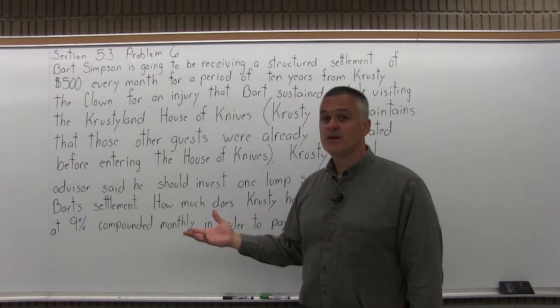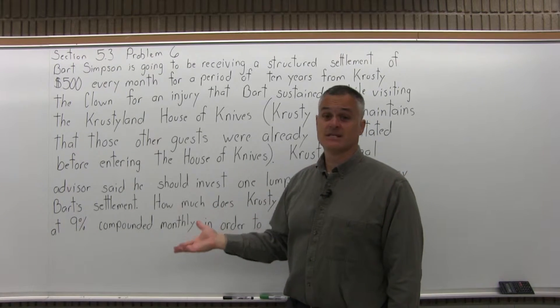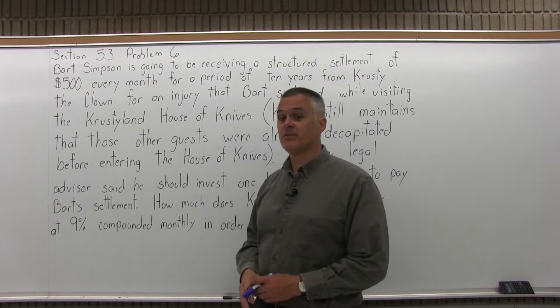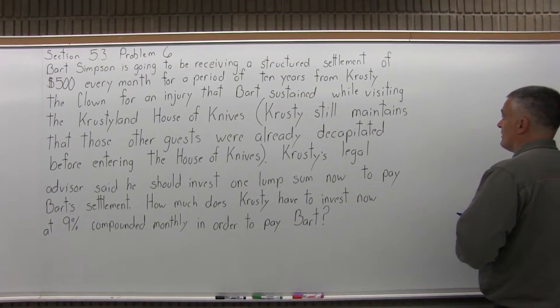But if Krusty has the money up front, he should be able to pay that with less than $60,000, and the interest he earns will help him pay that essentially salary. So it is a present value of an annuity.